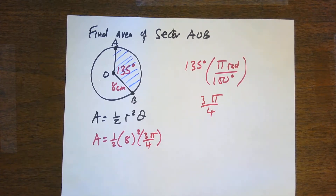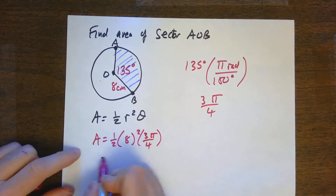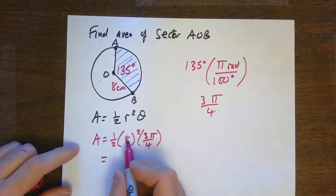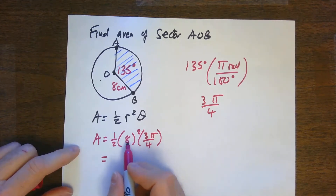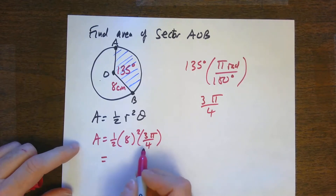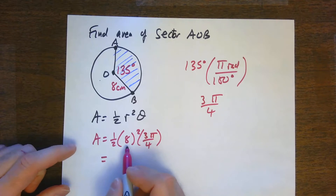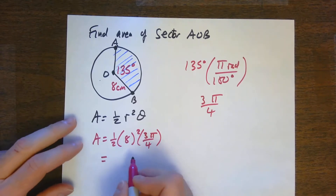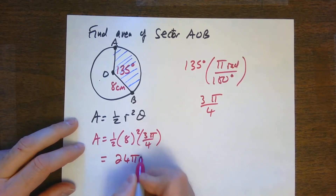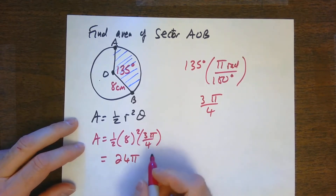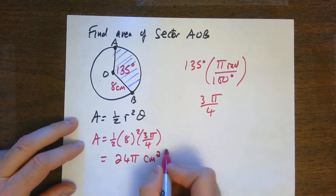So I put 3π/4 in for theta. Simplifying: 8 squared is 64, divided by 2 is 32, times 3π/4 — dividing 32 by 4 gives 8, times 3 gives 24π centimeters squared.